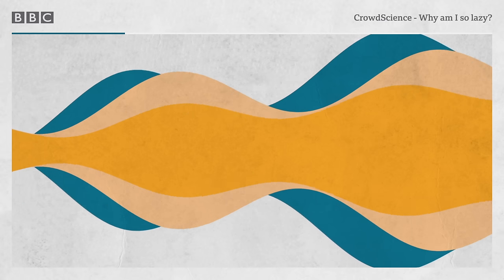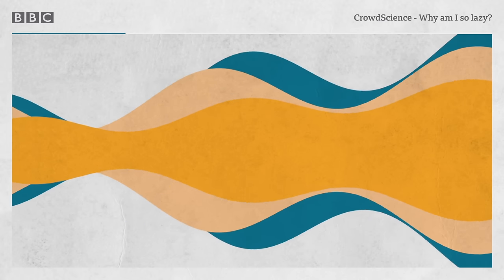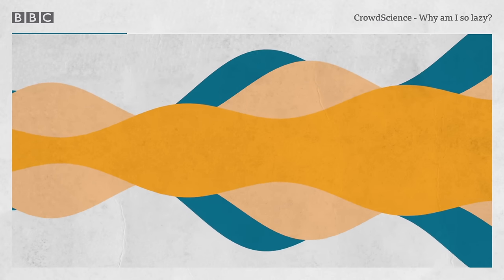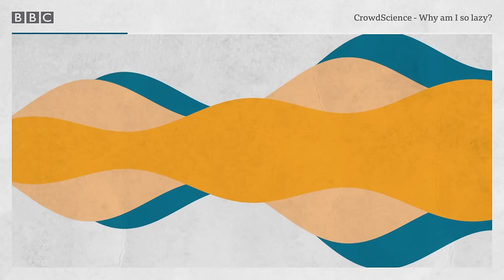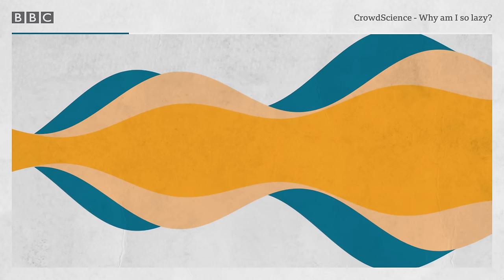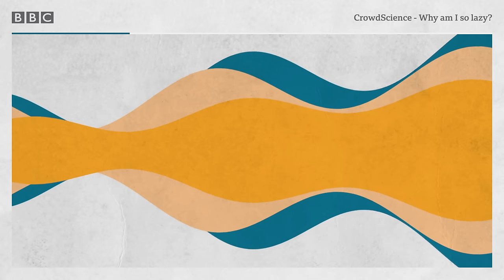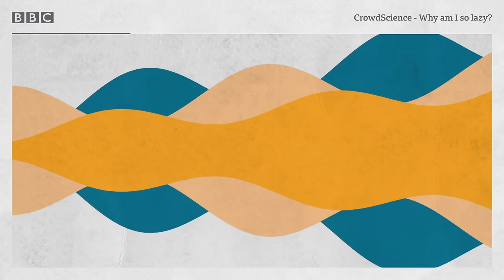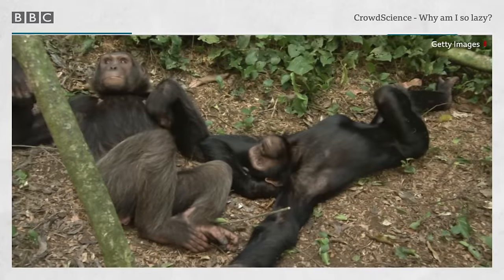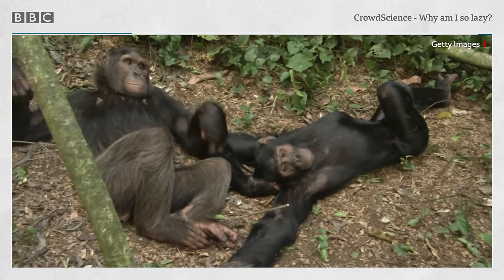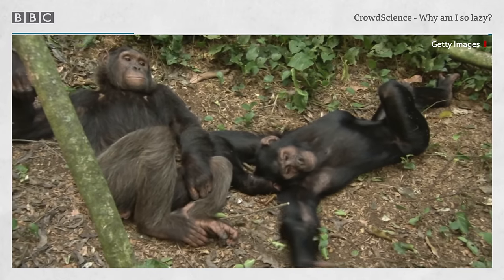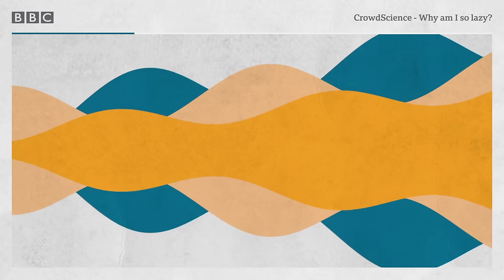So procrastination is to do with the negative emotions connected to unpleasant tasks, and maybe being less in touch with the future you who's going to have to deal with them. But shaming herself by using the L word is only likely to make things worse for Lori. But what about Lori's love for lying around? That lack of energy sounds more physical.